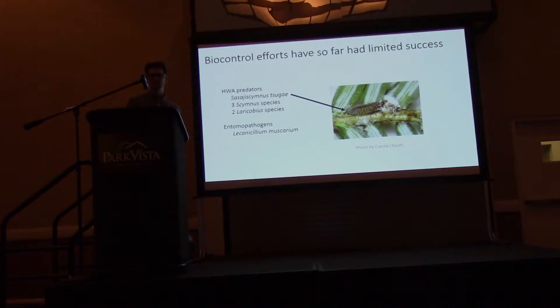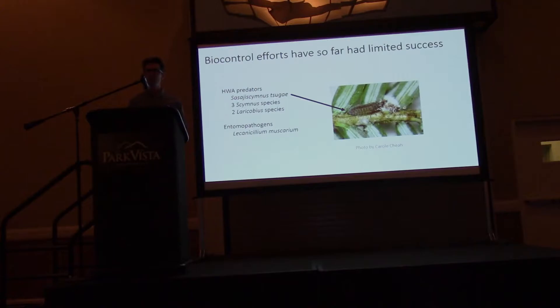There have been a couple of different ways we've tried to control hemlock woolly adelgid — one of them being chemical spraying. While that is effective, it's not necessarily sustainable; we can't really spray the entire forest. Another approach has been to introduce predators of the hemlock woolly adelgid that are native to its range. However, they don't really establish here, so far the success has been somewhat limited.